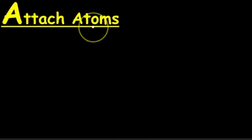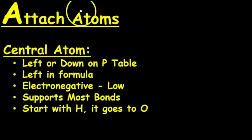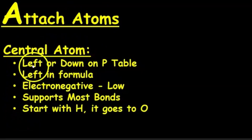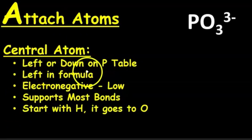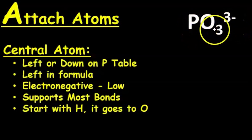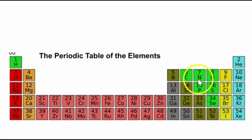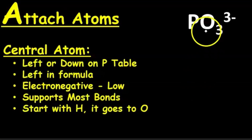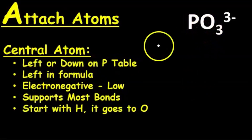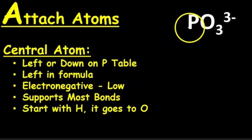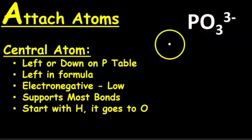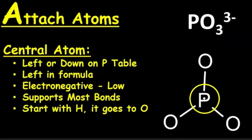We want to attach the atoms, and there are a few criteria. We want to determine which atom is the central atom, and there's an acronym here: LA-LESS. The central atom is often left or down on the periodic table. If we look at phosphorus and oxygen on the periodic table, phosphorus is further to the left and down from oxygen, so it fits. It's also usually written to the left in the molecular formula. It's usually the one with the lowest electronegativity and supports the most number of bonds, and all other atoms are attached to the central atom.